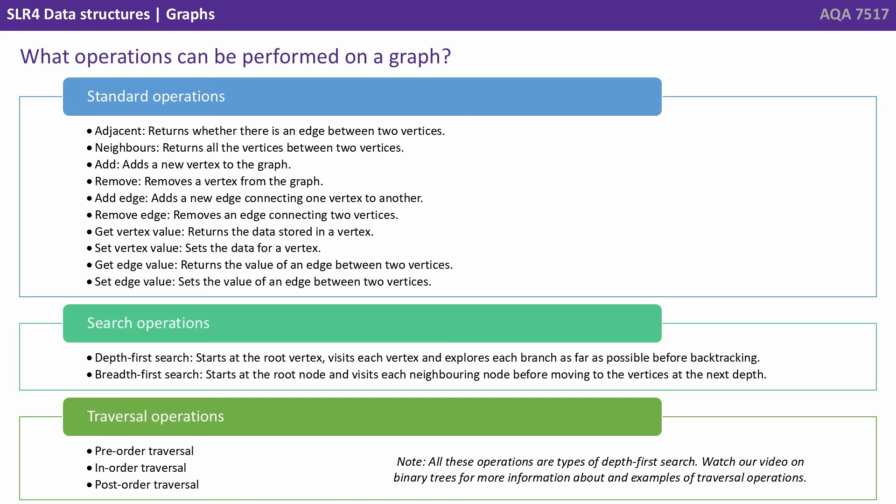So what operations can be performed on a graph? Well there's quite a few standard operations. Adjacent returns whether there's an edge between two vertices. Neighbours returns all the vertices between two vertices. Add adds a new vertex to the graph. Remove removes a vertex from the graph. Add edge adds a new edge connecting one vertex to another. And remove edge removes an edge connecting two vertices.